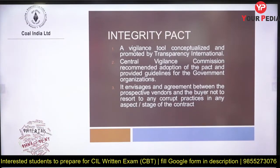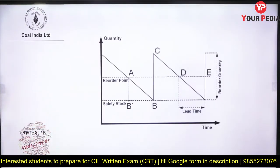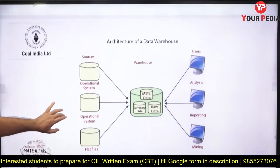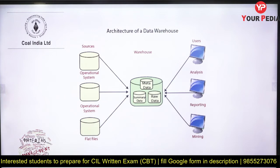Integrity Pact is very important — it was recommended by the Central Vigilance Commission and promoted by Transparency International. It provides regulations and guidelines for government organizations to choose vendors and suppliers, and is meant to prevent corruption. A diagram showing reorder point, safety stock, and lead time is important — the reorder point, safety stock, and lead time are to be read from such a diagram.